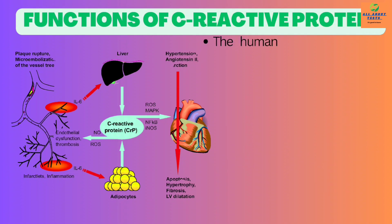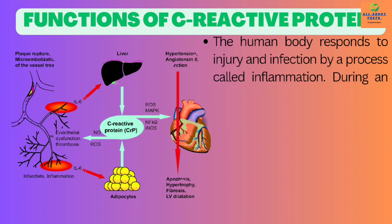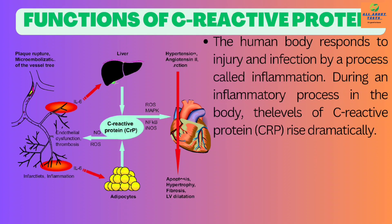The human body responds to injury and infection by a process called inflammation. During an inflammatory process in the body, the levels of C-reactive protein, CRP, rise dramatically.